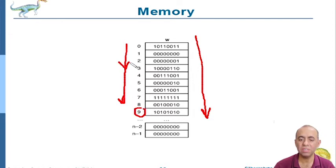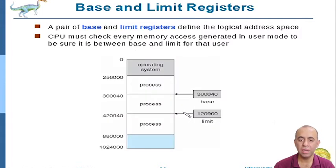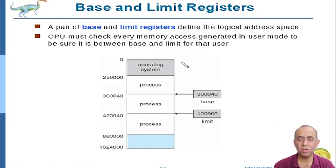If you want to read address 9, you don't need to go through all locations — the system gives you the value stored at that address based on the address number. This is the basic concept of main memory. Main memory stores all the processes and the operating system itself.